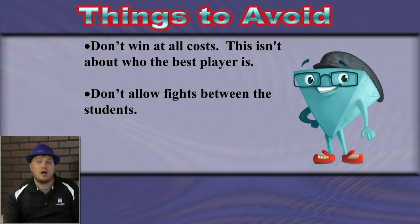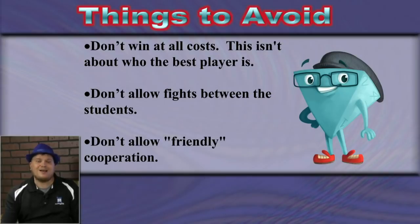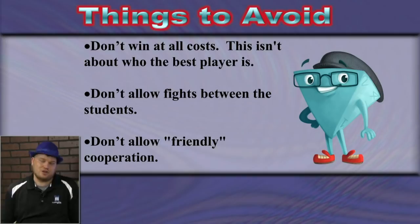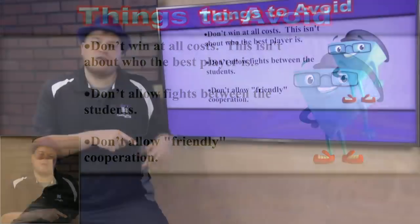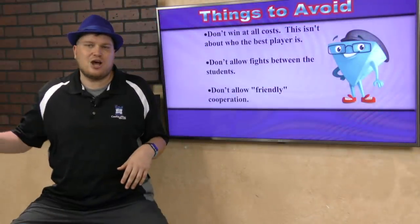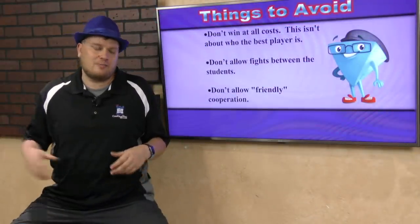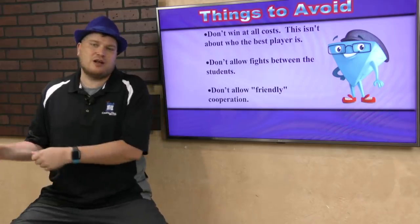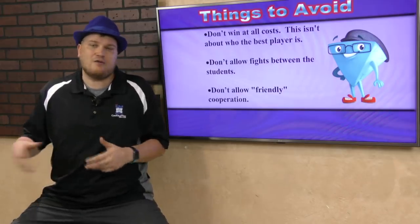Another thing to avoid is friendly cooperation or collusion — where Martha and Susan are working together, or Billy and John are working together. And Billy's like, here John, you can have all my money, I'm going to make you win.